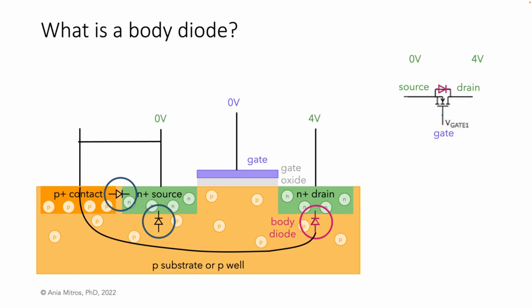The diode between the p-well and the n-drain is our body diode. The body diode is an inherent part of the construction of a MOSFET.